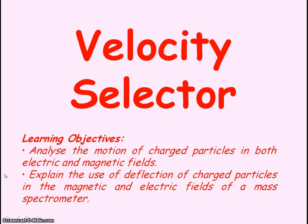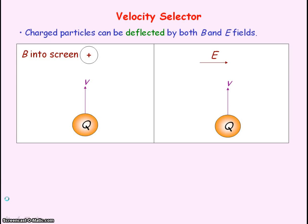We're going to be looking at a velocity selector and its use in a mass spectrometer. We know charged particles can be deflected by both magnetic and electric fields.